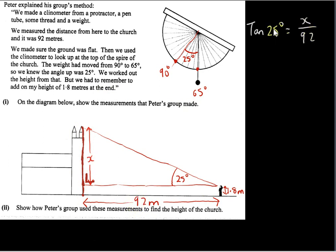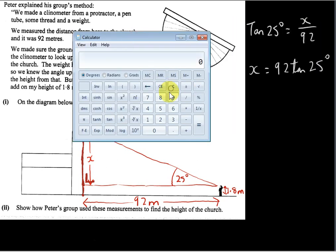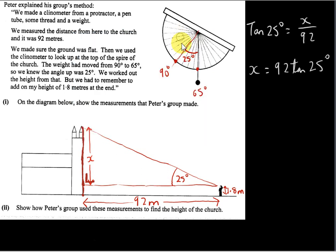So how do we find x from this? Well, we just multiply both sides by 92. That's the tan of 25, multiply this by 92. So I'll write this down to one decimal place, 42.9.